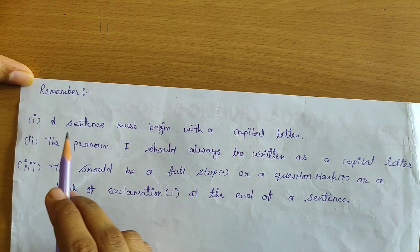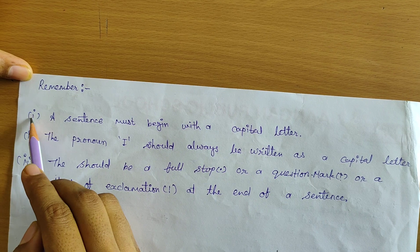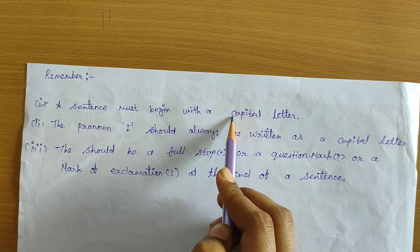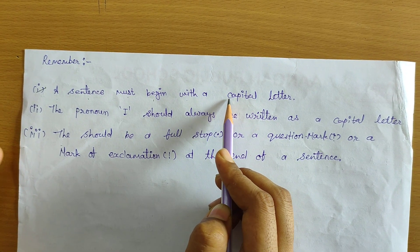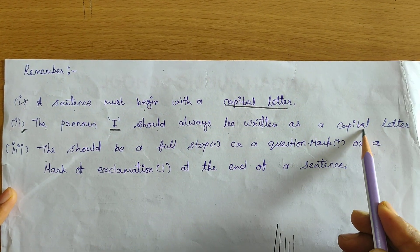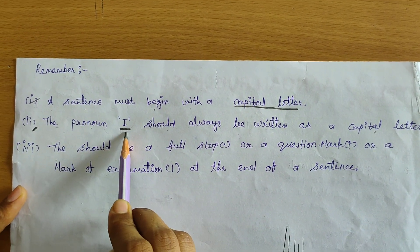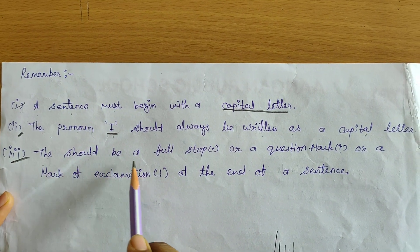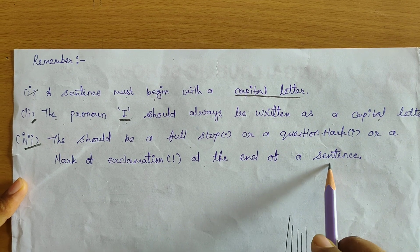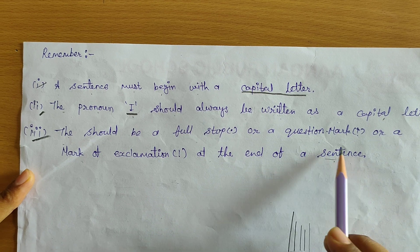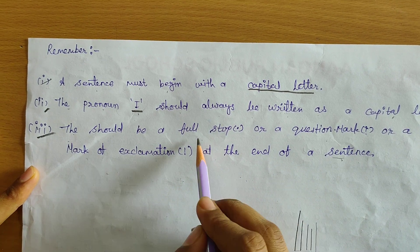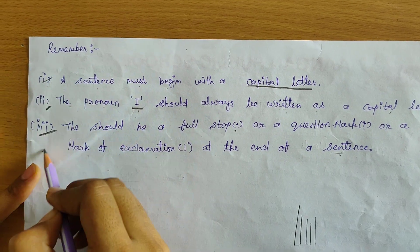Here are some important points of the sentence you should remember. First: a sentence must begin with a capital letter — जब sentence की starting होती है तो starting वाले word का initial letter capital लिखना है. Second: the pronoun 'I' should always be written as a capital letter. Third: there should be a full stop, or question mark, or mark of exclamation at the end of the sentence — if we ask a question, we put a question mark; otherwise we put a full stop.